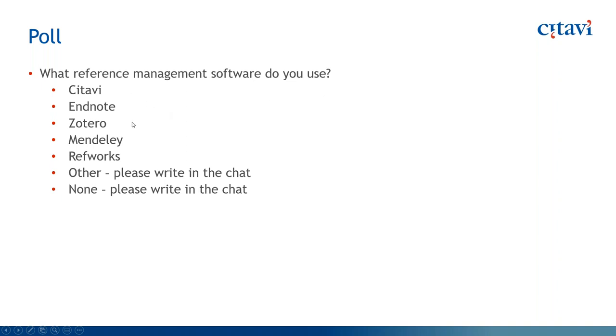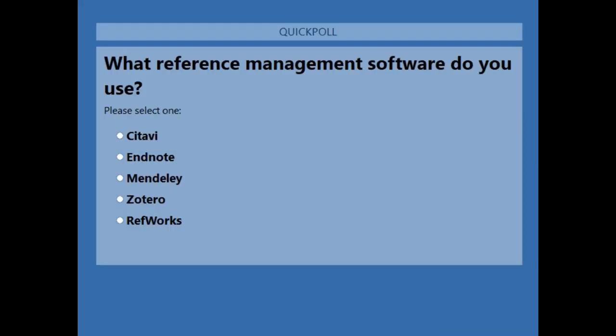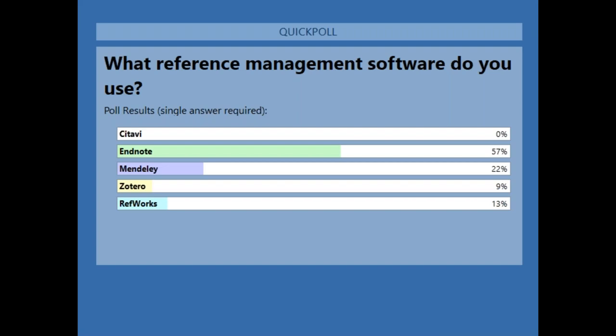One more poll: what reference management software do you currently use? Choices are Satabi, EndNote, Zotero, Mendeley, and RefWorks — if you're using something else, please put it in the chat. Results: nobody's using Satabi, which is probably why you're here. 57% are using EndNote, 22% Mendeley, 9% Zotero, and 13% RefWorks. Looks like everyone's using something, so thank you for doing that.